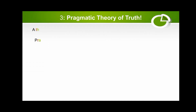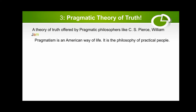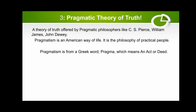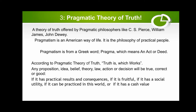Pragmatic theory of truth: a theory of truth offered by pragmatist philosophers like C.S. Peirce, William James, and John Dewey. Pragmatism is an American way of life — the philosophy of practical people. It comes from the Greek word 'pragma,' meaning an act or deed. According to the pragmatic theory of truth, truth is what works. Any proposition, idea, belief, theory, law, action, or decision will be true, correct, or good if it has practical results and consequences — if it is fruitful, has social utility, can be practiced in the world, or has a cash value.